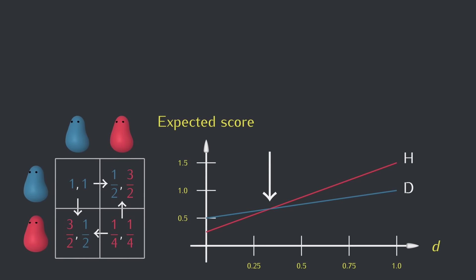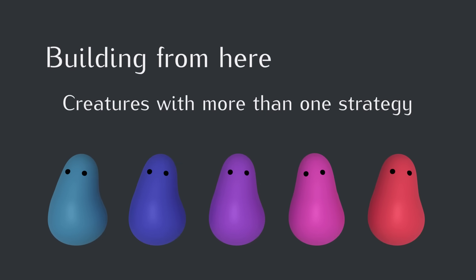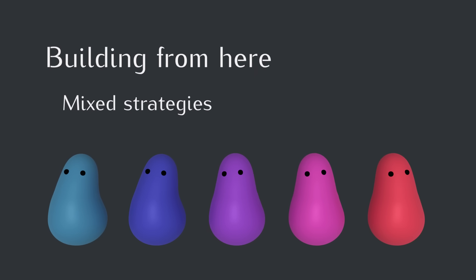And before we go, I want to give you some teasers for how we'll build on this to get closer to reality in future videos. First, creatures in the real world can play more than one strategy. So instead of having their behavior completely determined by a single gene, our creatures could have several genes affecting their behavior, causing them to have different chances of playing hawk or dove. And the game theory term for this is mixed strategies.